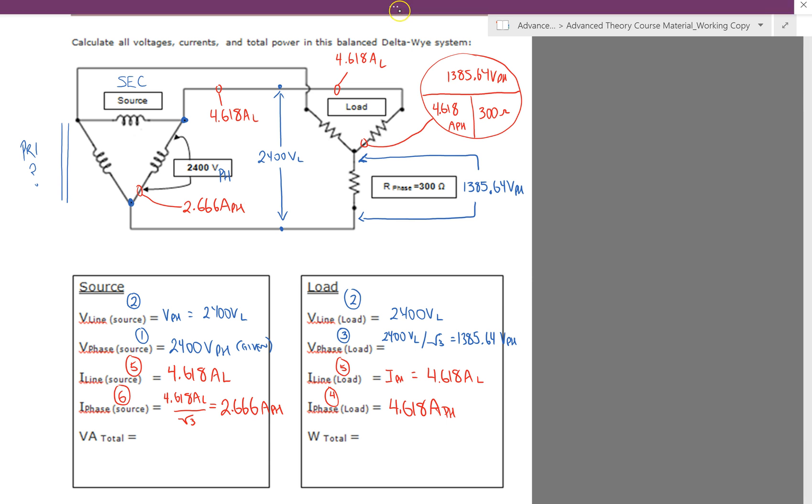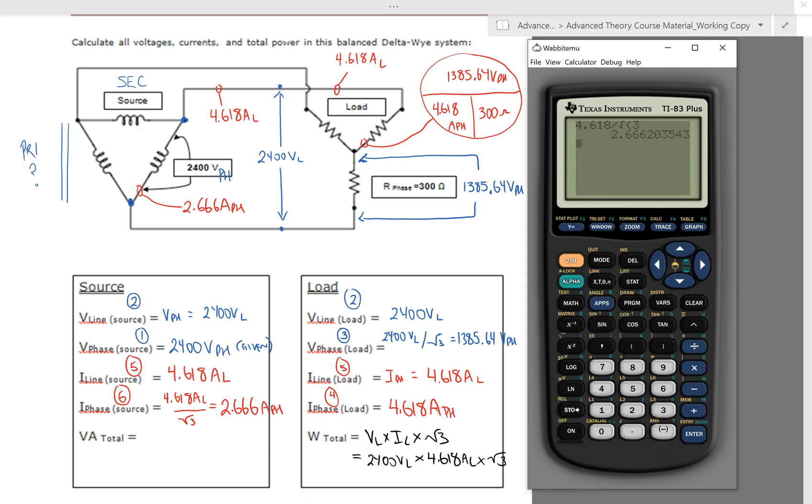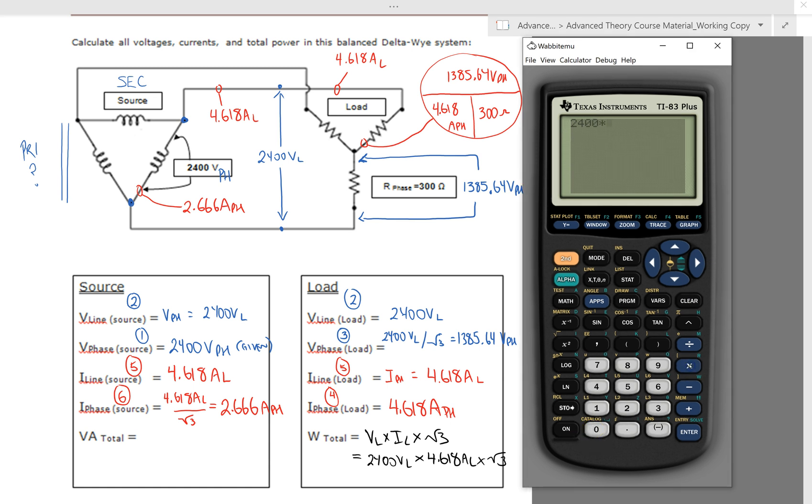And then the last thing we need is the total wattage. So we'll do V line times I line times root three. So in this case, the V line over here is 2400 volts on the line. We'll multiply it by our current 4.618. So make sure you grab the right values there. And we'll multiply that by root three. So let's see, we've got 2400 times 4.618 times the square root of three, and that gives us 19,196. Beautiful.